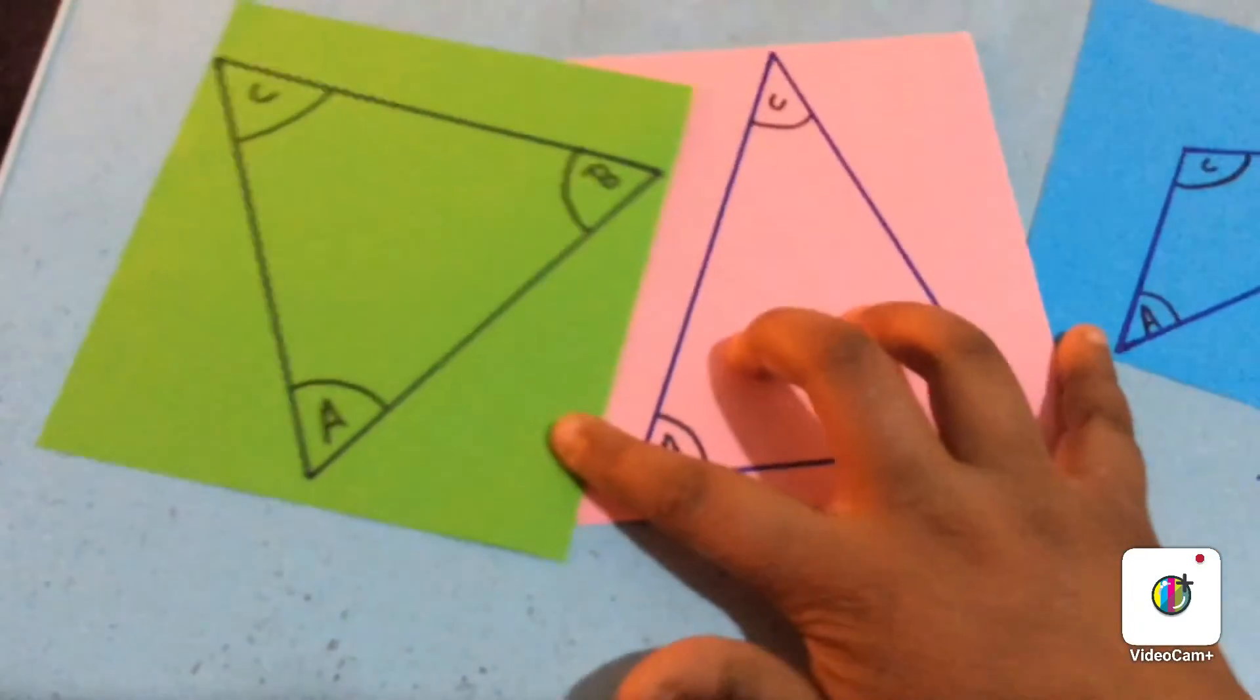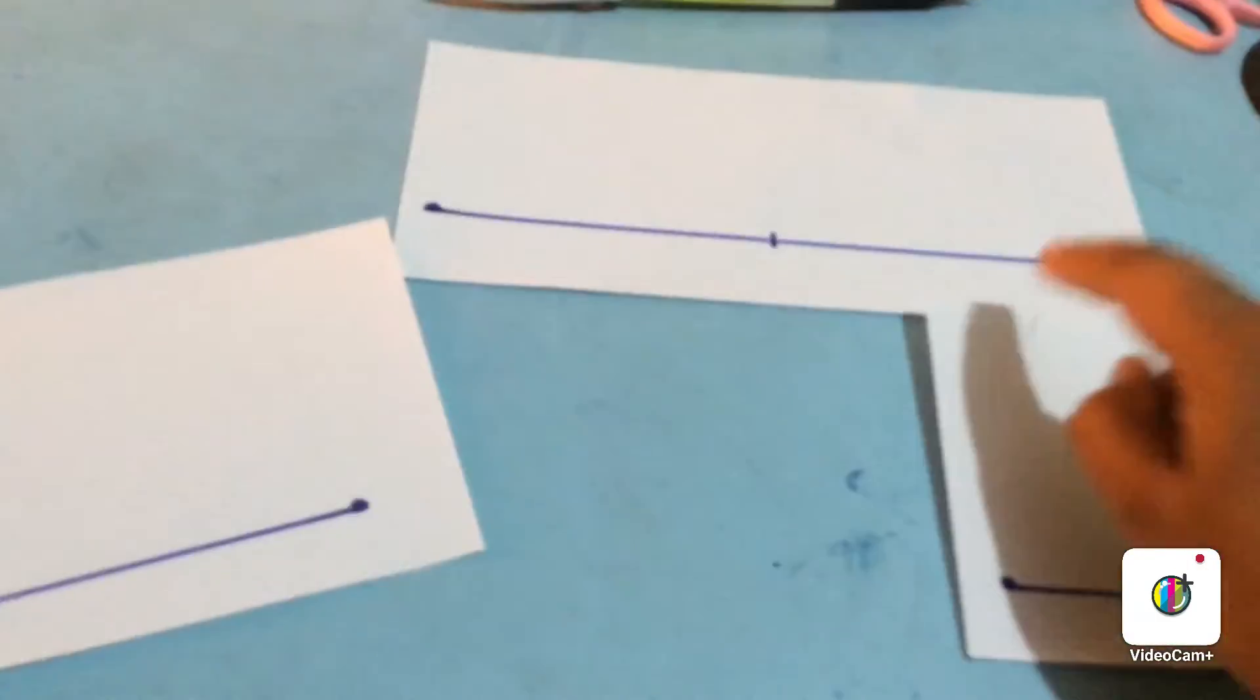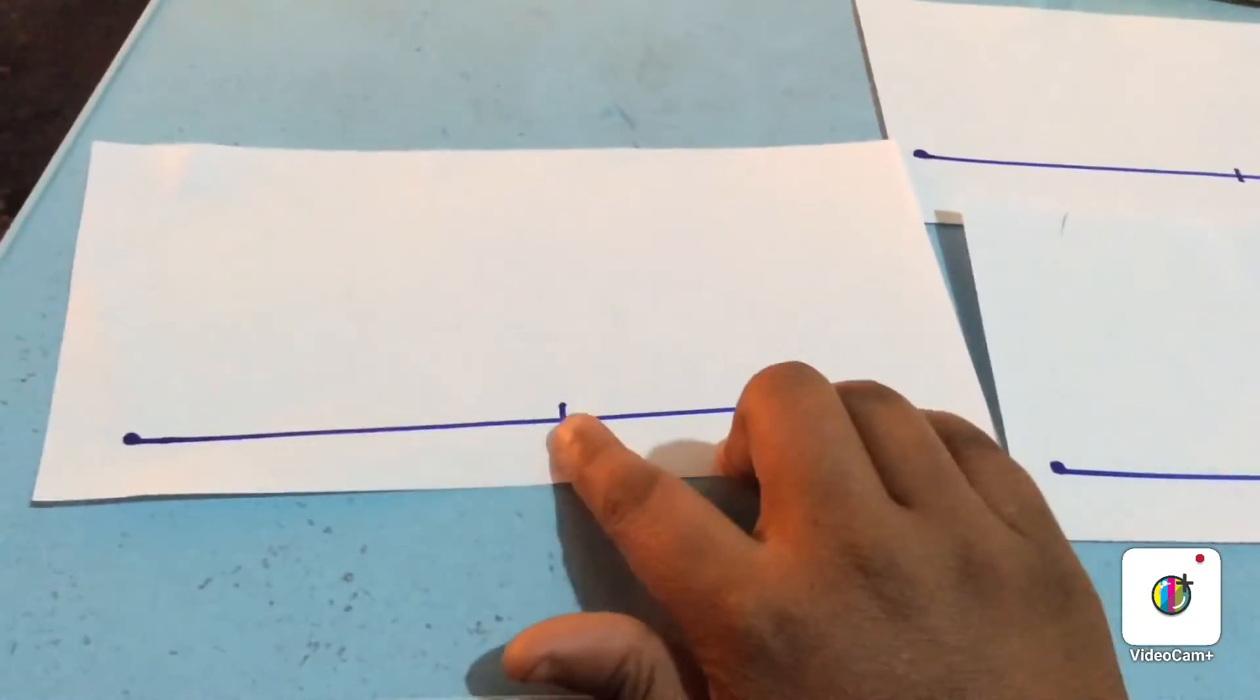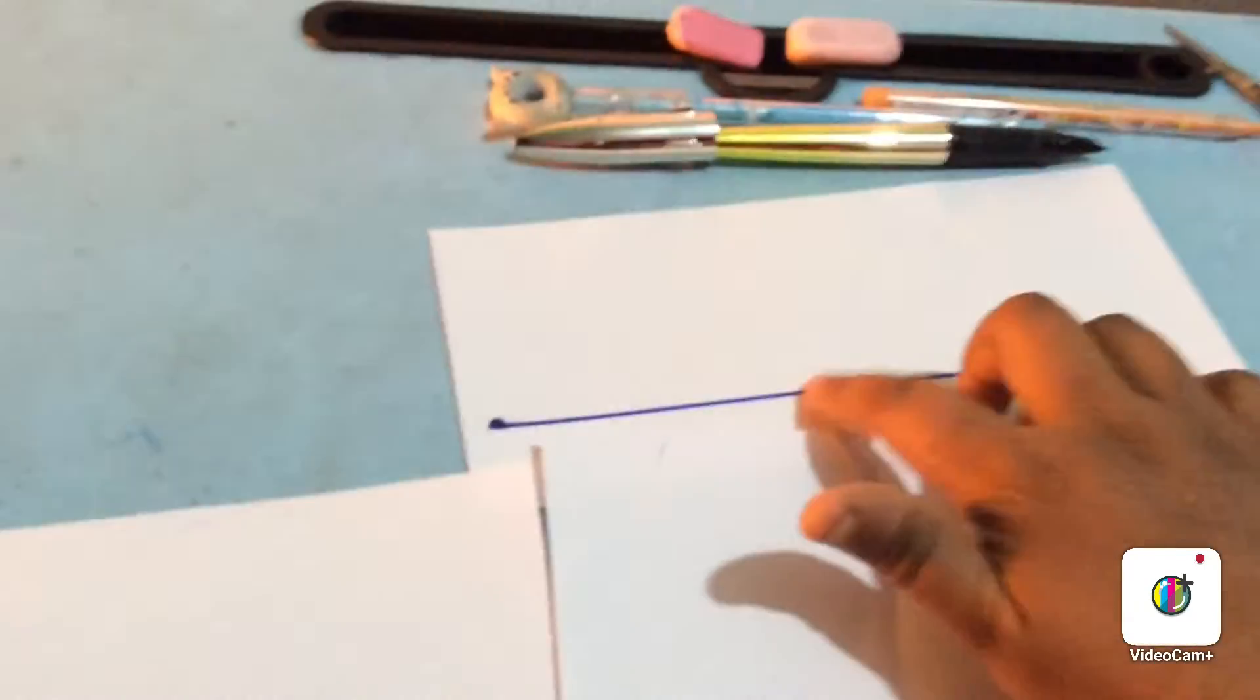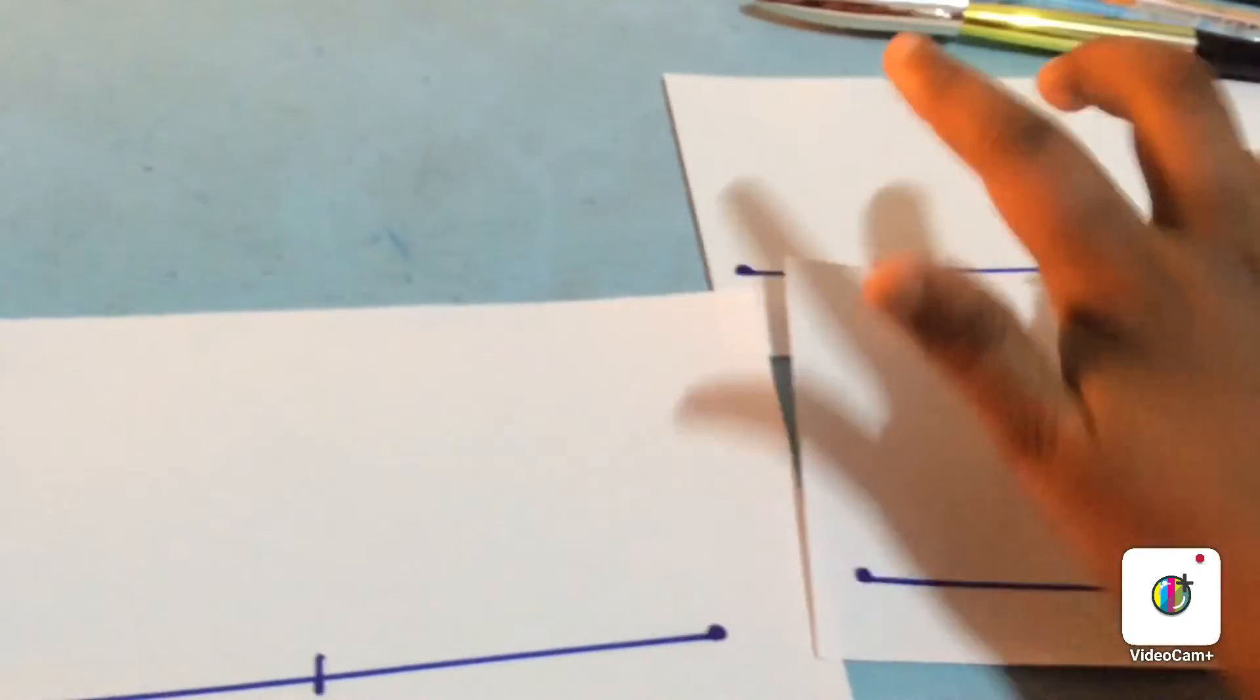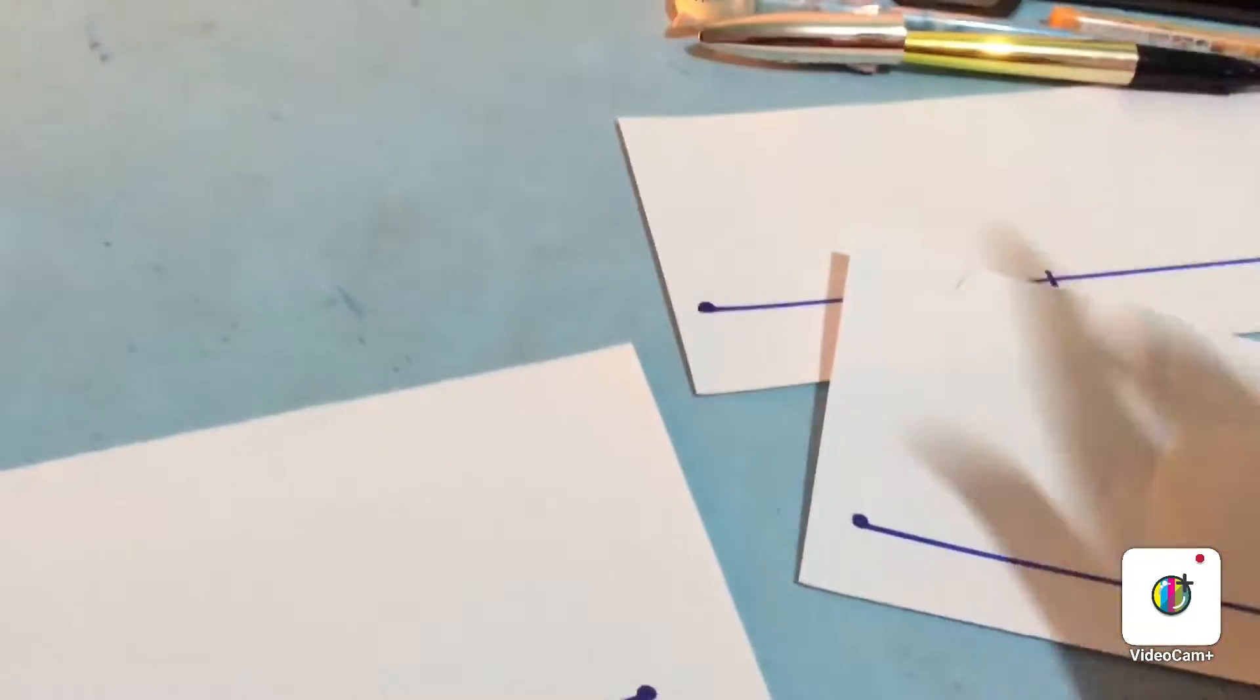Now we'll be doing the fun part. The three pieces of plain paper which I had taken, I have drawn single line segments in all of them and marked a spot where we do the project. Now I'll write each triangle's name here: scalene, equilateral, and isosceles.